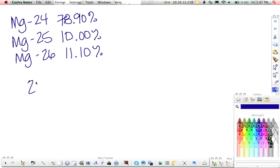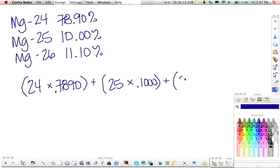So take magnesium-24, 24 times 0.7890, multiply this by 25 times 0.1000 plus 26 times 0.1110. Yes, I know, these masses are not exactly 24, 25, and 26. 24 is actually 23.99, 25 is actually 24.99, 26 is actually 25.98. They're just a little bit lower. But for our purposes at this level, this works just fine. We don't need to carry it out that far. So this works out to be 24.31 AMUs is the average atomic mass of magnesium.